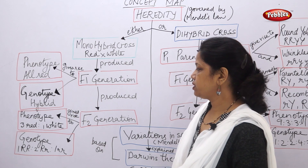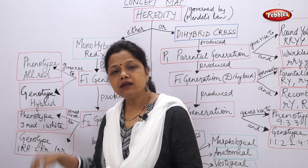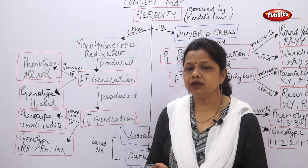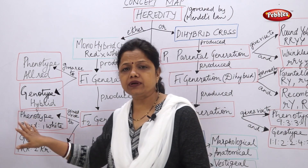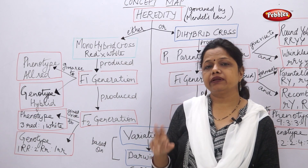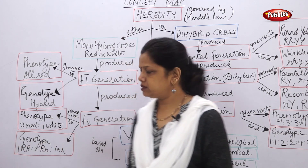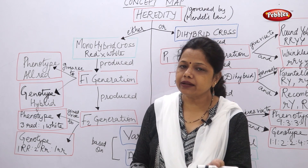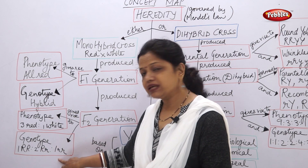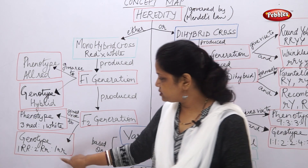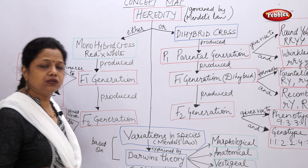When F1 generation plants were taken as parents, they gave rise to the F2 generation. In the F2 generation, he observed four plants: three were red and one was white, meaning in three plants the red color was dominant. Genotypically the ratio was 1:2:1 — one pure dominant (RR), two hybrid (Rr) showing red due to dominant character, and one pure recessive (rr) showing white. This was the monohybrid cross showing how various hereditary characters are generated.